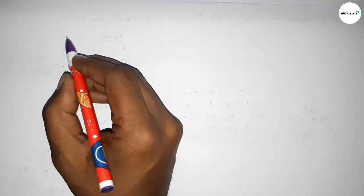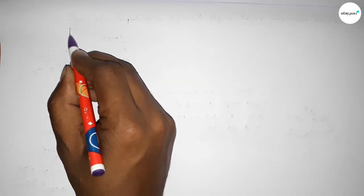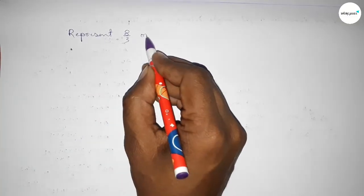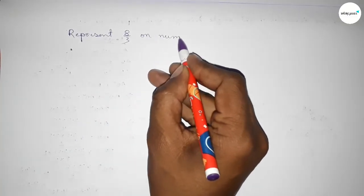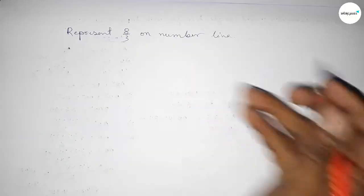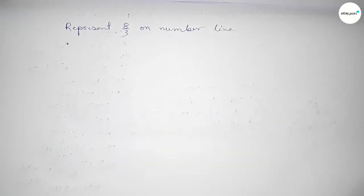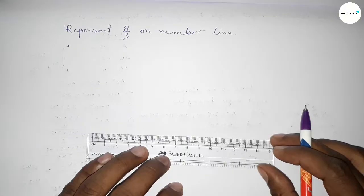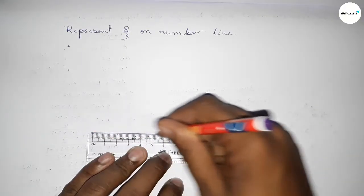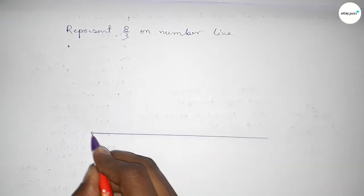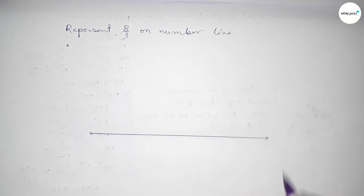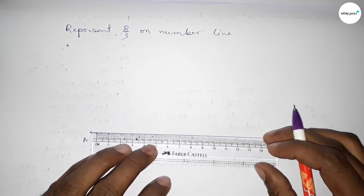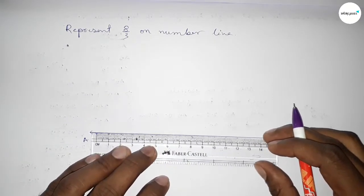Hi everyone, welcome to Say Share Classes. Today in this video we have to represent 8 over 3 on a number line. So let's start the video. First of all, we have to draw here the number line. Drawing a line and taking arrow marks on both sides — this is the AB line.